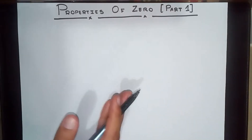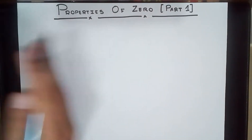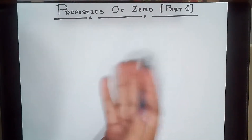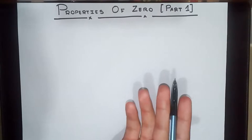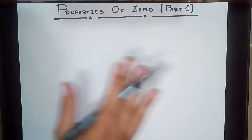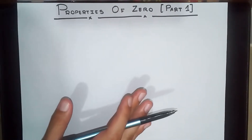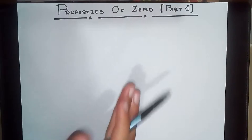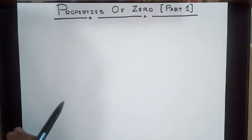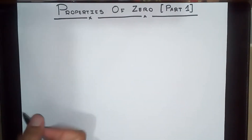Right now we are discussing the properties of zero. It is an exciting number and there are a total of nine properties — nine interesting properties — but right now we are only covering five.